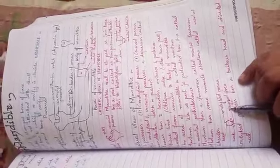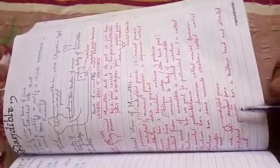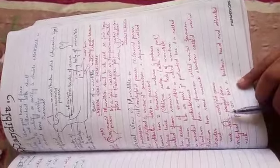The condyloid process has a bulbous head and a constricted neck. This is the condyloid process, which has a head and a neck.